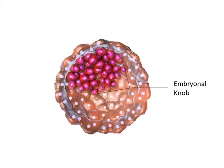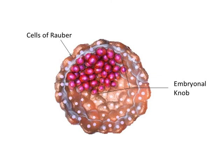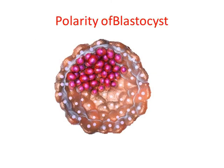The trophoblast cells in contact with the inner cell mass are called the cells of Rauber. At this stage, the blastocyst shows polarity. The side with the inner cell mass is called the embryonic pole, and the side opposite to it is the ab-embryonic pole.